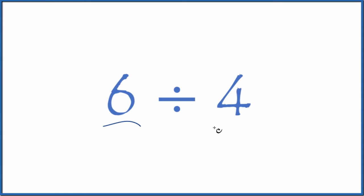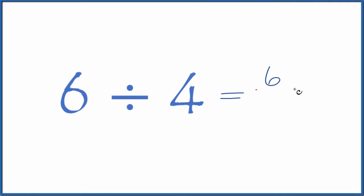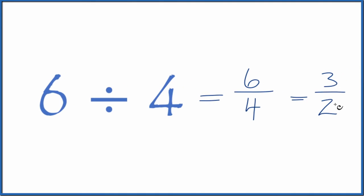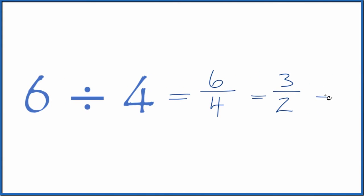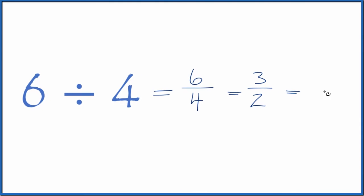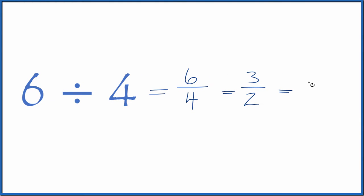Let's divide 6 by 4. One way to think about this, we could just consider this a fraction — 6 over 4, that's 6 fourths. You could reduce this since both of these numbers are even: divide 6 by 2 you get 3, 4 by 2 you get 2. And if you wanted this to be a number with a decimal, you could divide 6 by 4, or 3 by 2 — you'll get the same answer: 1.5.